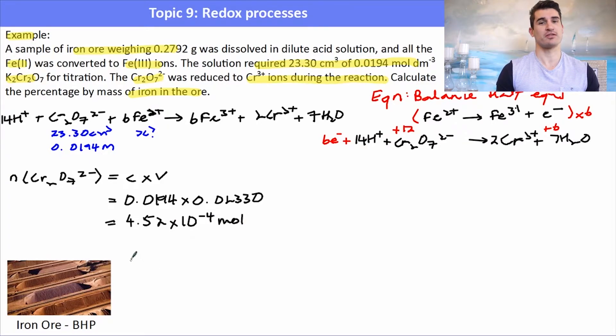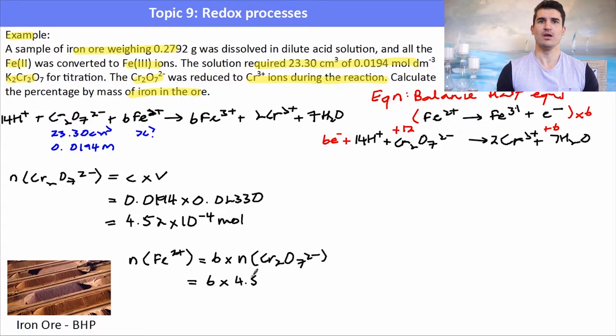Now I use my ratio, the thing that we want over the thing that we've got. So the number of moles of Fe²⁺ is 6 over 1 times the number of moles of the dichromate ions. So it's 6 times 4.52 times 10 to the minus 4. Doing that calculation I can work out the number of moles of Fe²⁺.